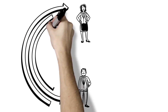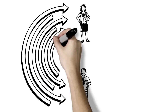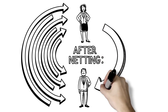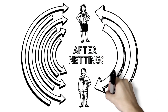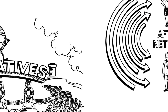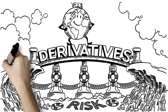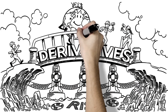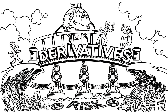Legally enforceable netting agreements that bundle together obligations between counterparties lower derivatives credit risk to about $3.3 trillion. Since the financial crisis, regulators around the world have put measures in place to make the market even more robust and resilient.